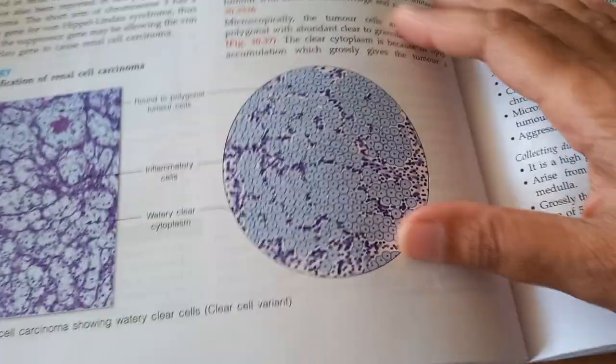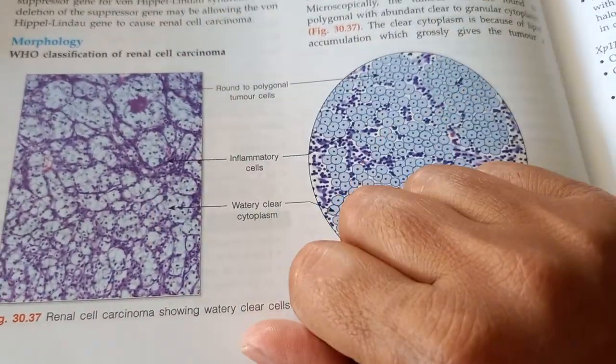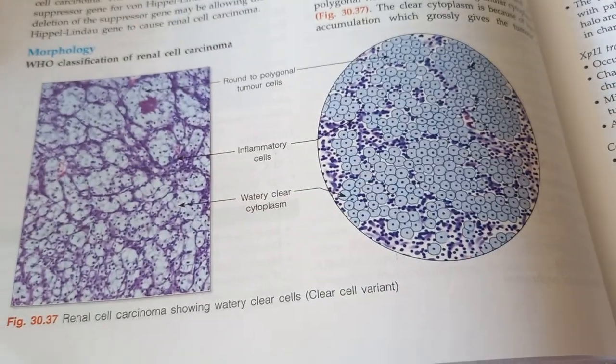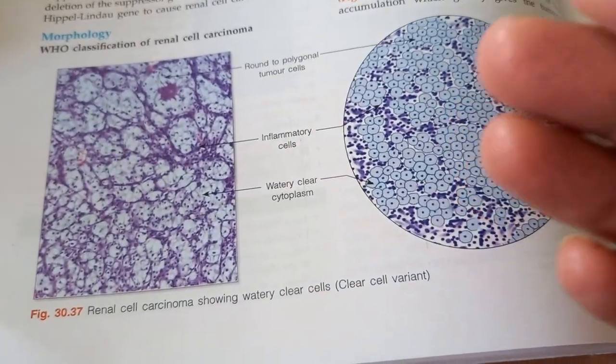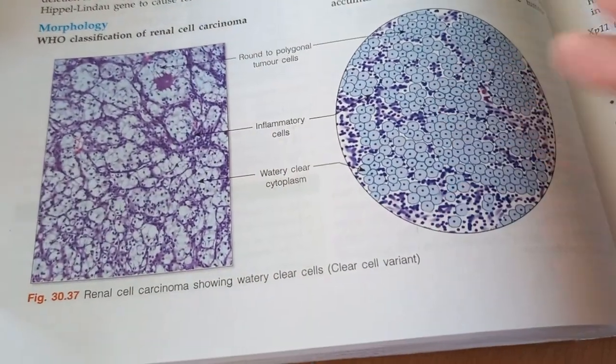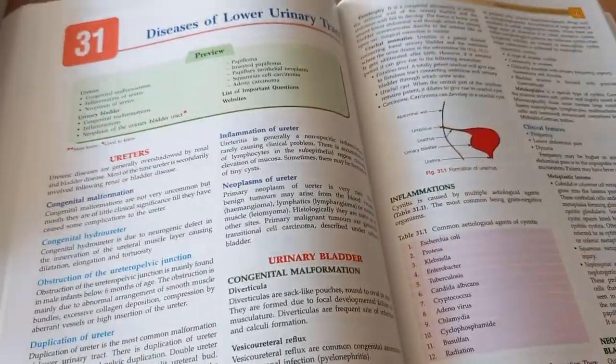This is the diagram you will have to draw in the exam. Clear cell variant of renal cell carcinoma. In this, there will be hematuria. In the symptoms, if they tell you hematuria is there, then you should think about one of the things is renal cell carcinoma also. There can be many causes of hematuria, but it can be renal cell carcinoma also.